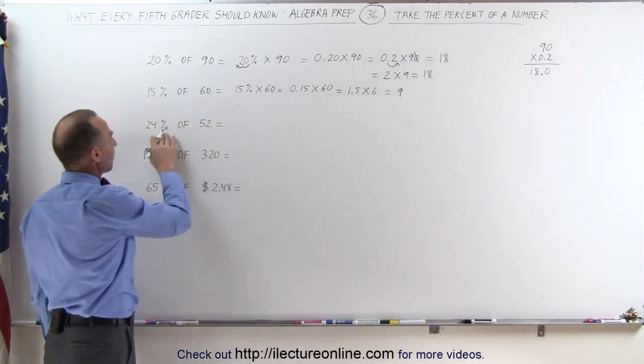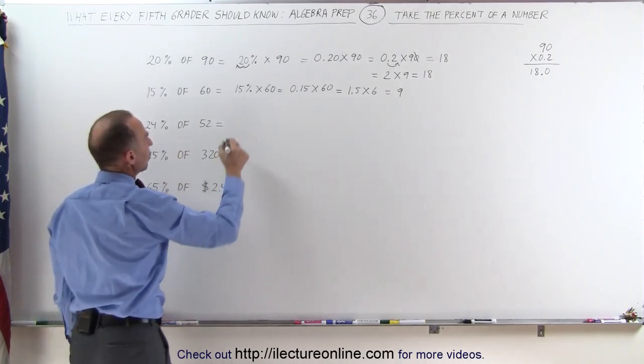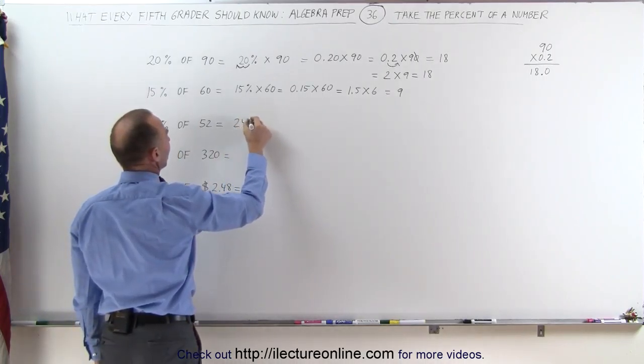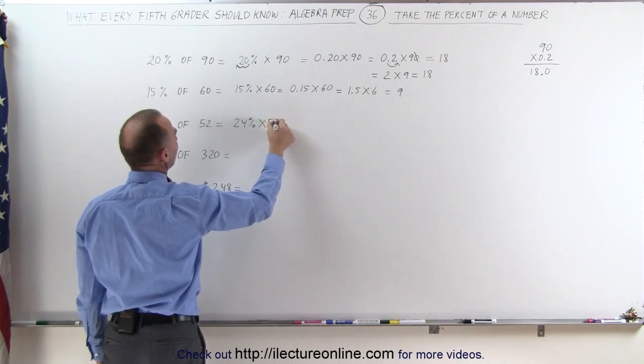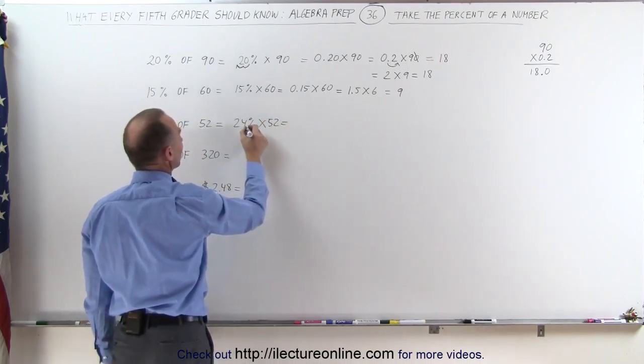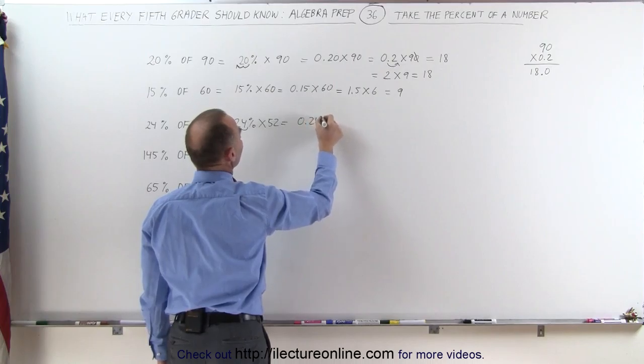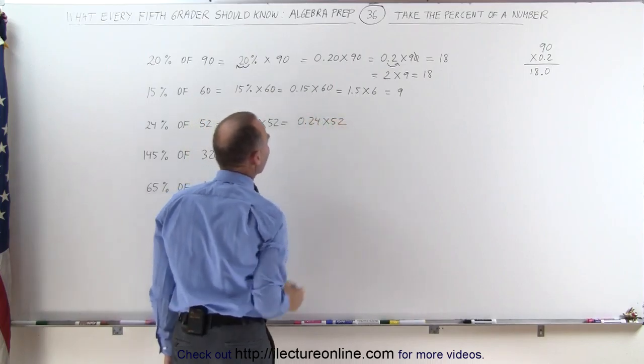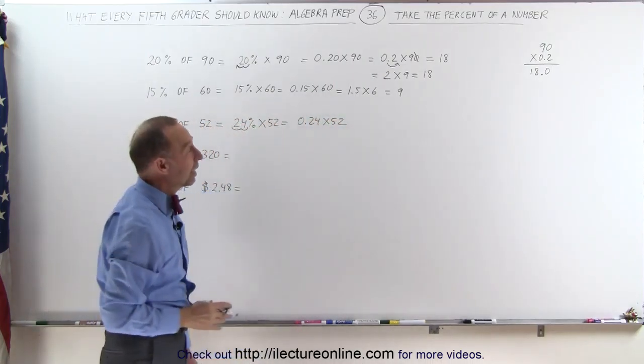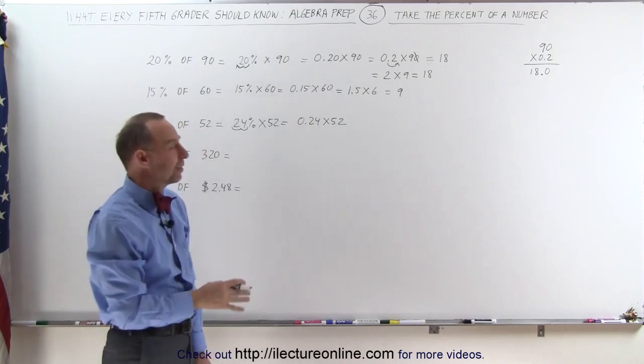The next example: 24% of 52. That's 24% times 52, which is the same as 0.24 times 52 when I move the decimal place over two spots. Here, no special trick will help us. We simply have to multiply it longhand.